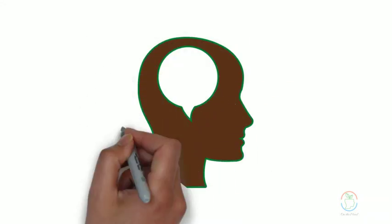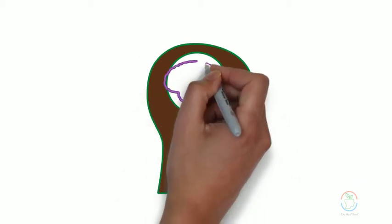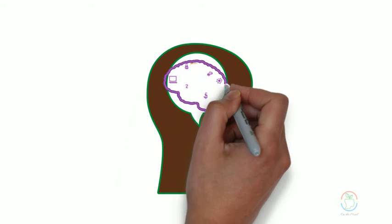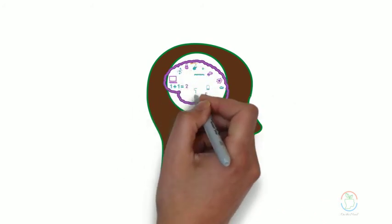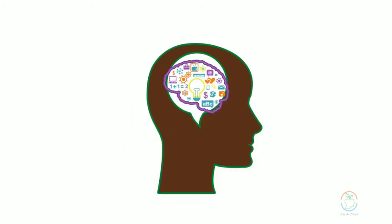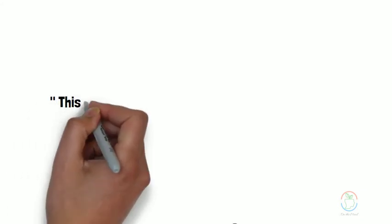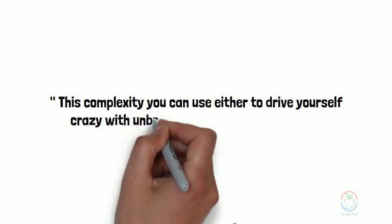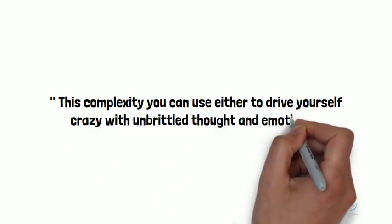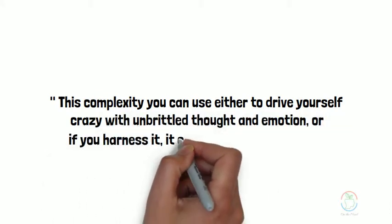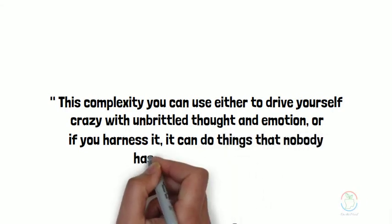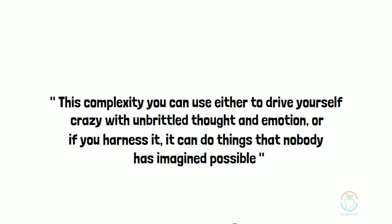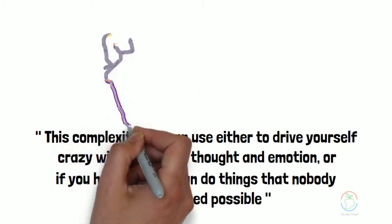A complex mathematical problem, a sensation, a music, some raga, this, that - hundred things at the same time. Because that is how complex human mind is. This complexity you can use either to drive yourself crazy with unbridled thought and emotion, or if you harness it, it can do things that nobody has imagined possible. It can do things in a miraculous way. You can manifest things in a phenomenal way if the necessary training goes.